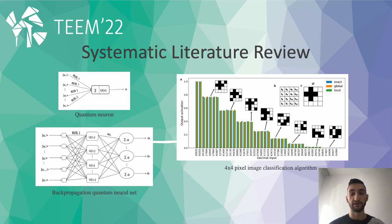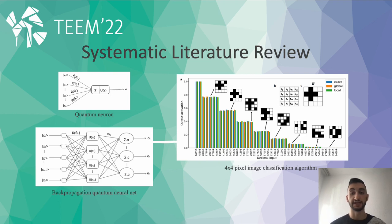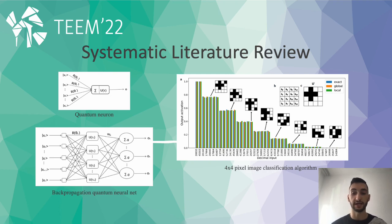At the beginning of 2022, we published a systematic literature review in the quantum machine learning field. This is a review of the literature published between 2017 and 2021, presented to identify, analyze, and classify the different algorithms using quantum machine learning and their applications.